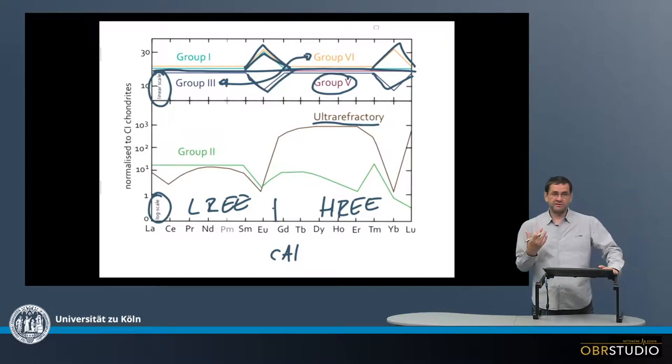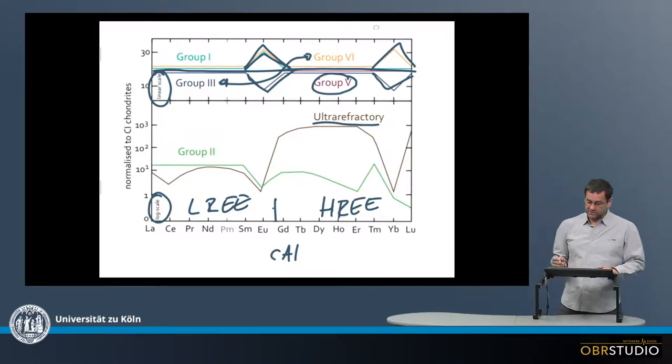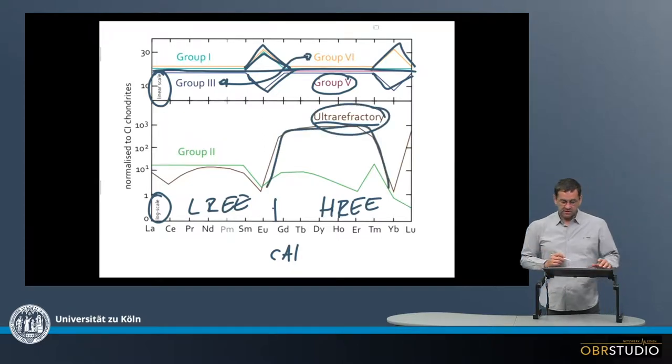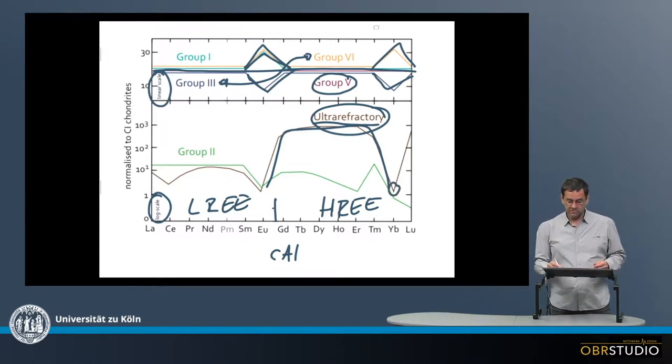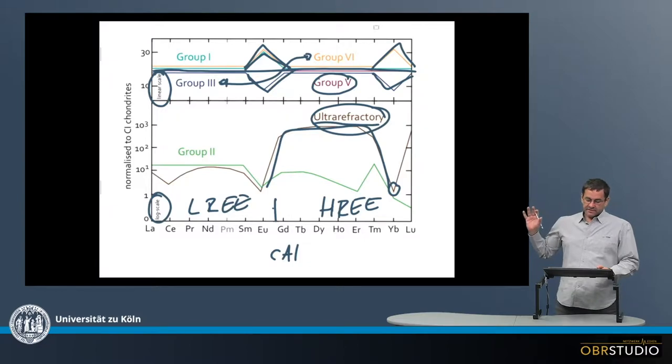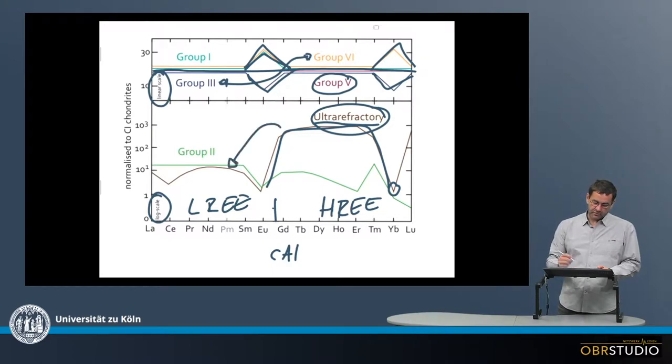Heavy rare earth elements are also a little more refractory, and they can have an ultra-refractory pattern here with very high enrichment in the heavy rare earth elements, except for ytterbium, which is quite volatile. There are enrichments about up to three orders of magnitude higher than the other rare earth elements, and maybe two orders of magnitude enrichment or fractionation from the light rare earth elements.